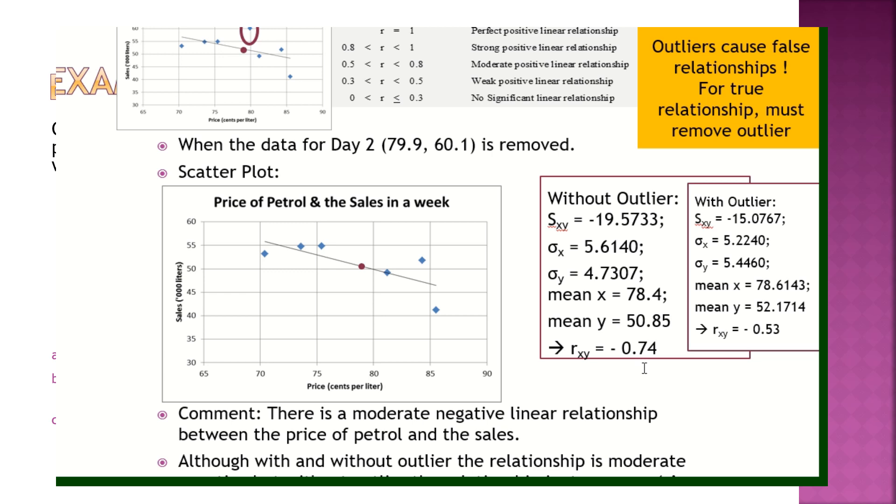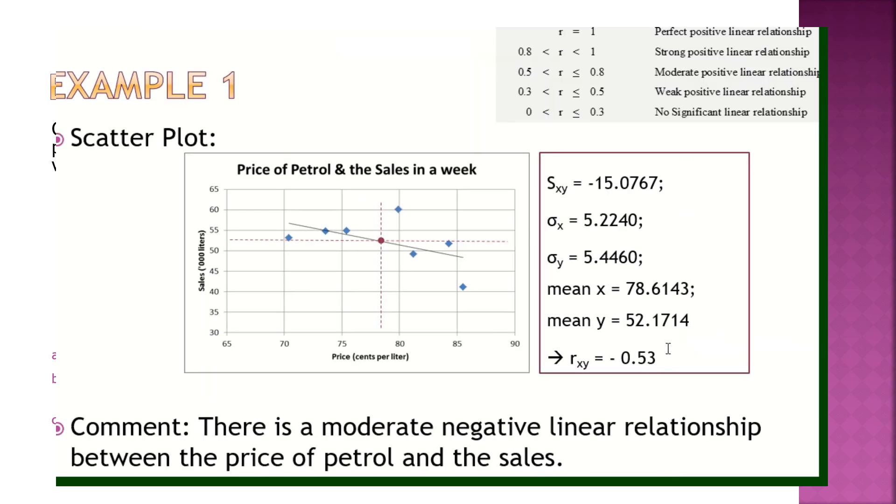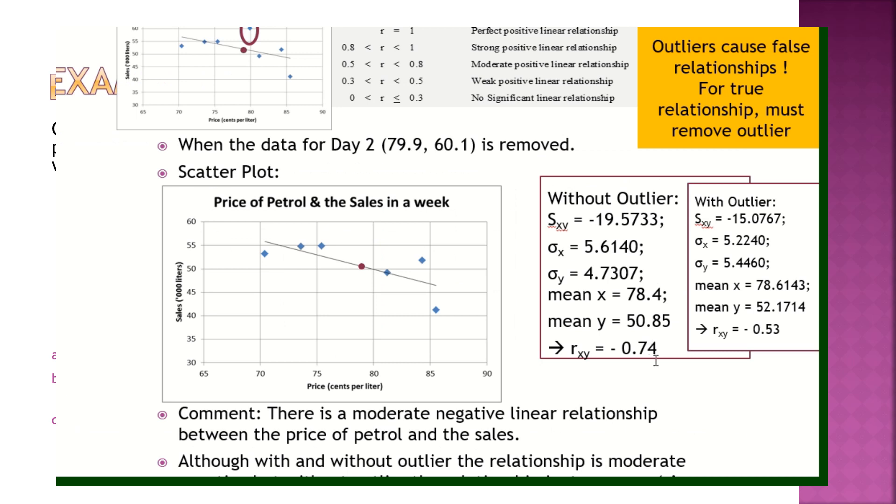What can you see from there, negative 0.74? Initially, it was negative 0.53. You take out outlier, relationship has become stronger. Why stronger? It's moving closer to negative 1. You understand? It is still a moderate negative linear relationship, but it's a stronger relationship.